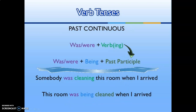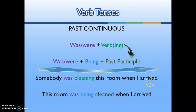For past continuous, the form is 'was' or 'were' plus verb -ing (active), and 'was' or 'were' plus 'being' plus past participle (passive). Example: 'Somebody was cleaning this room when I arrived.' In passive: 'This room was being cleaned when I arrived.'